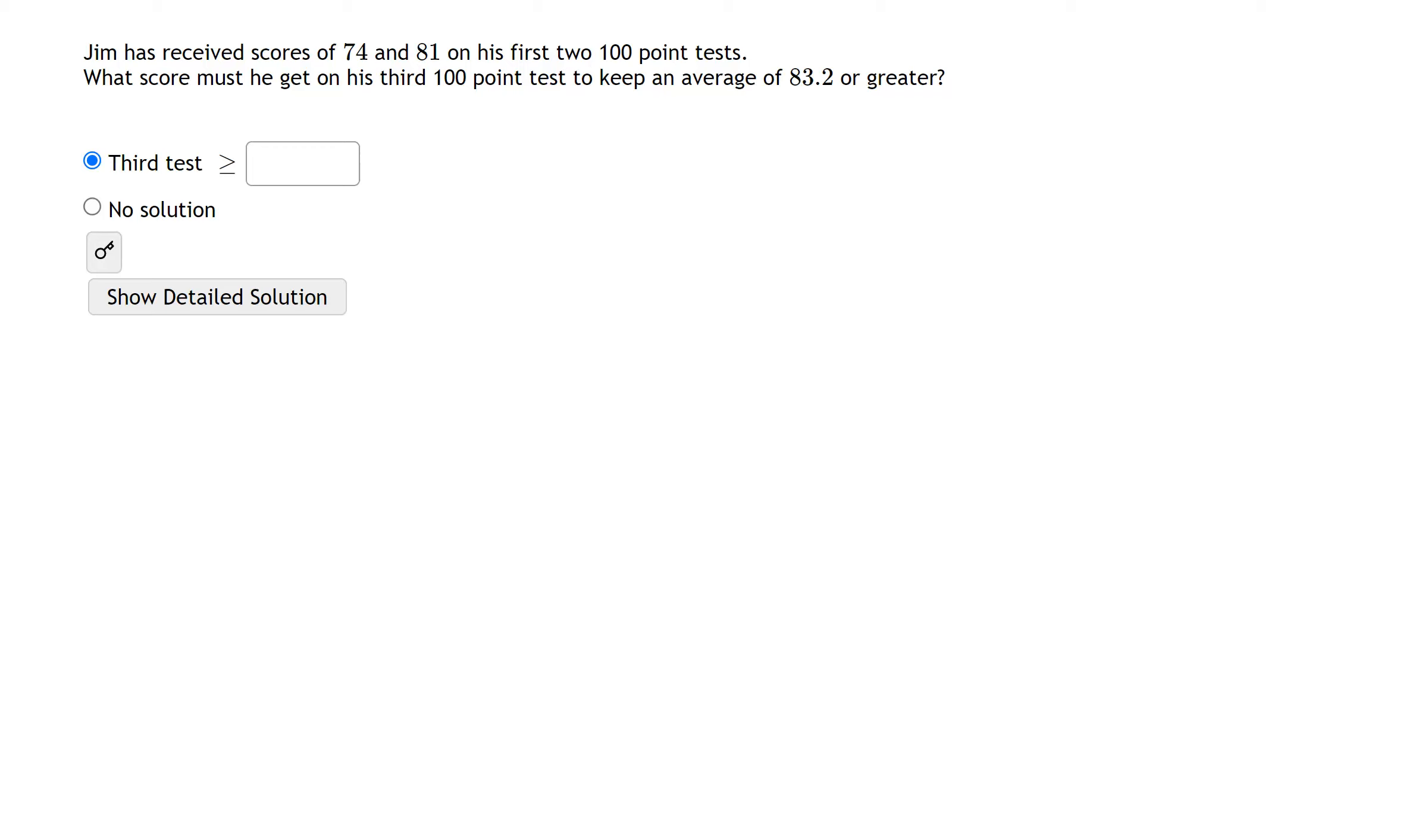So the values that we're looking at in this question, we have 74 plus 81, and then we don't know what Jim is going to get on his third exam. A lot of times in algebra, when we don't know a value, we give it a variable. So I'm going to say plus x, where x represents Jim's third exam score.